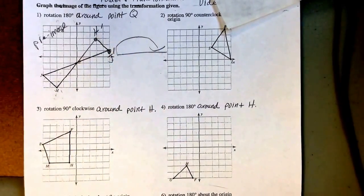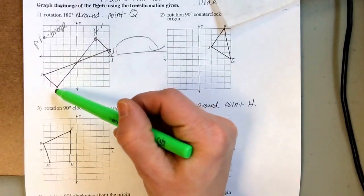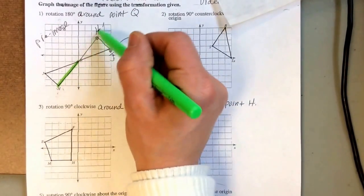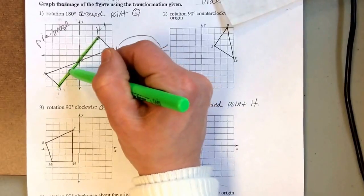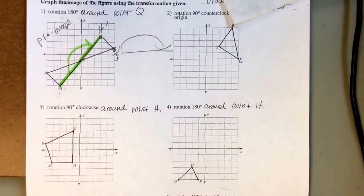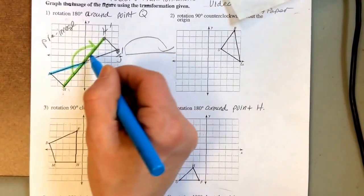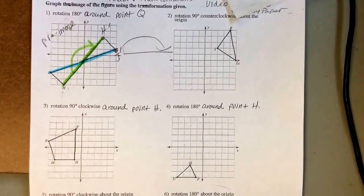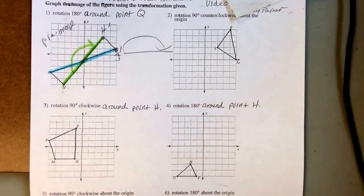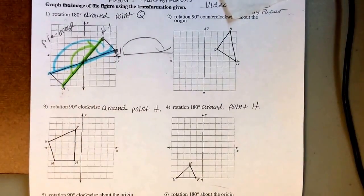That tick mark tells anyone looking at it which was the original point and which was the new one. I can test it: my original HQ forms a 180 degree straight angle with my new HQ, and my QJ forms a perfectly straight line with the other one. That confirms the 180 degree rotation.